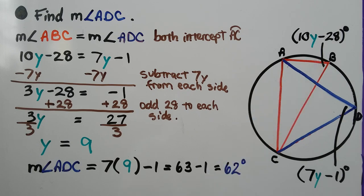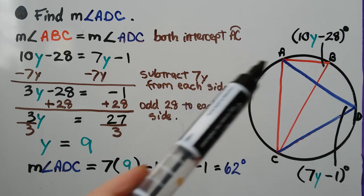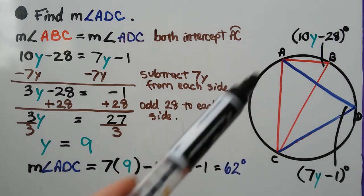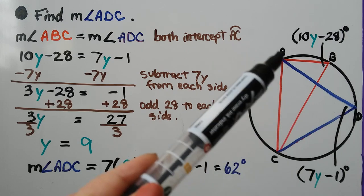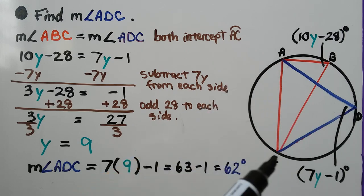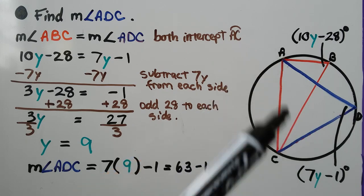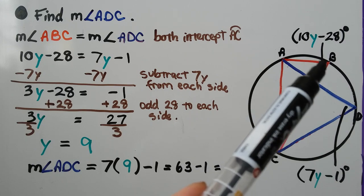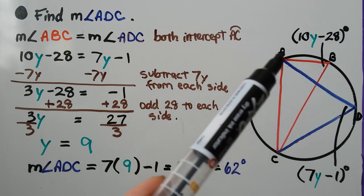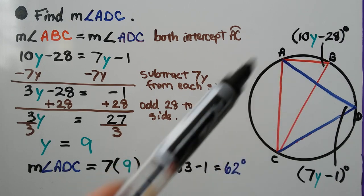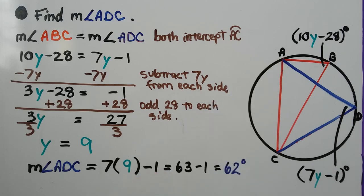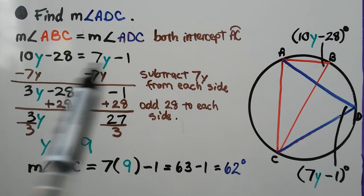it's 10y minus 28 degrees, is equal to the measure of angle ADC because both intercept arc AC. This one is intercepting AC, and this one right here from this point A to C is also intercepting AC. We can set them equal to each other because they have the same arc.